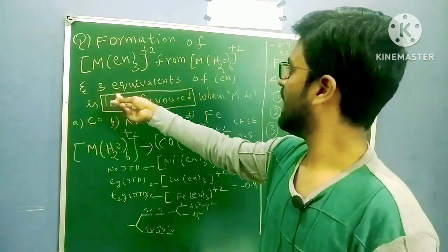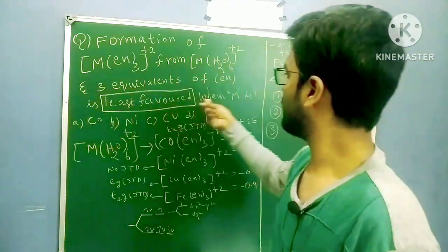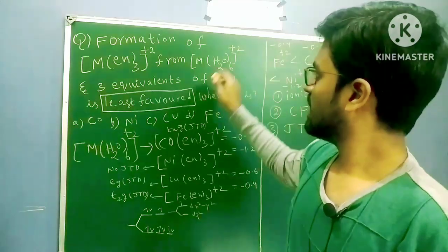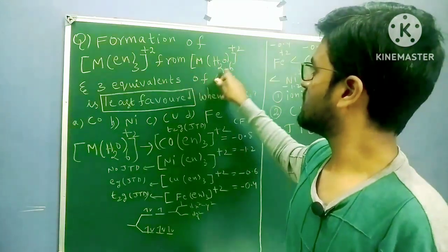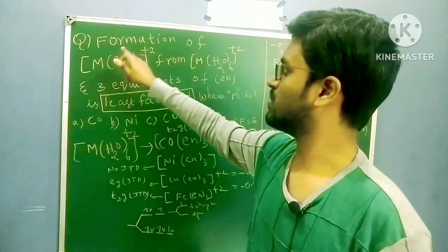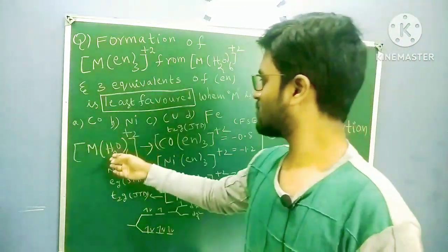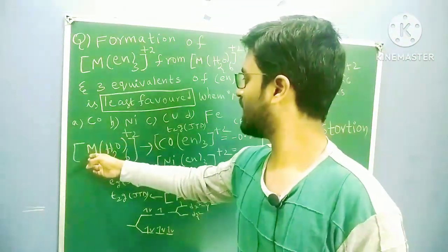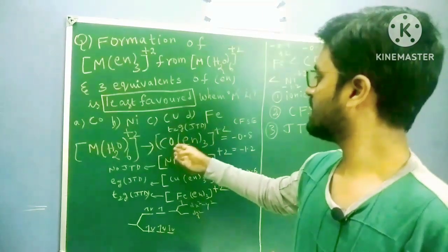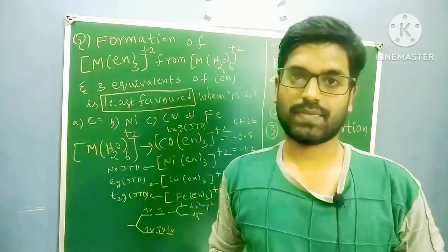and three equivalents of ethylenediamine is the least favorable when the metal is — what? If you see, [M(H₂O)₆]²⁺ is the reactant and [M(en)₃]²⁺ is the product. So the reaction is moving from [M(H₂O)₆]²⁺ to [M(en)₃]²⁺.